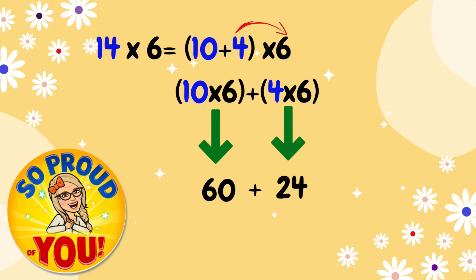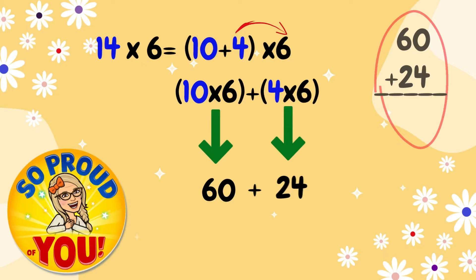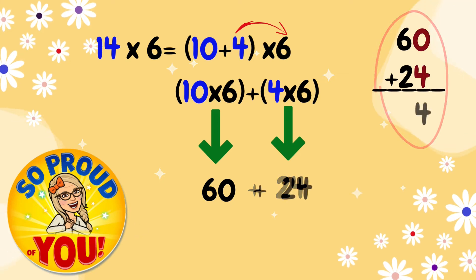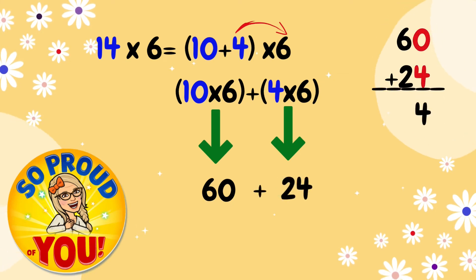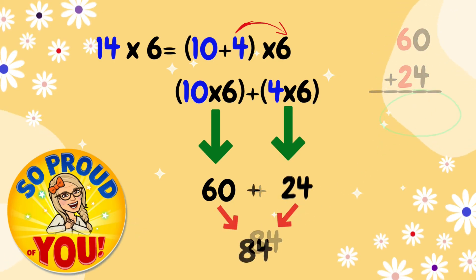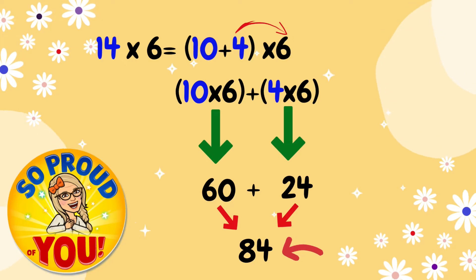What is the next step? Yes! Very good! Now, the next step is adding those products. 60 plus 24. 0 plus 4, 4. 6 plus 2, 8. Very good. So, my answer is 84. Fourteen times 6 equals 84. Excellent!